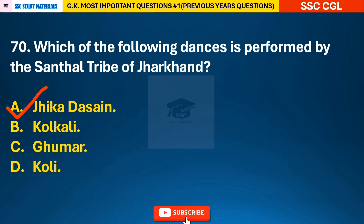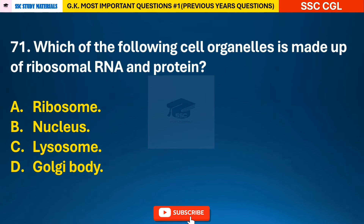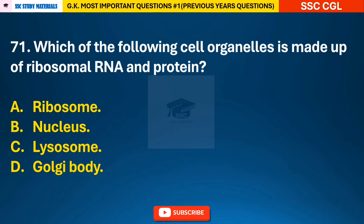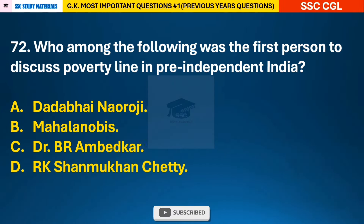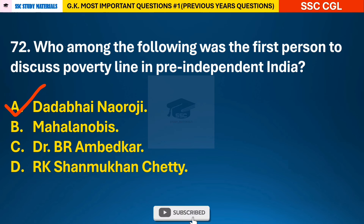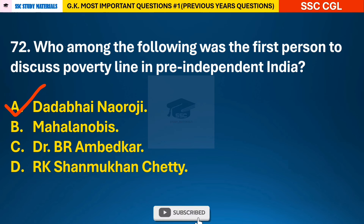Answer A: Jhumka Dasai. Question 71: Which of the following cell organelles is made up of ribosomal RNA and protein? — answer A: ribosome. Question 72: Who among the following was the first person to discuss the poverty line in pre-independent India? — answer A: Dadabhai Naoroji was the first person to discuss the poverty line in pre-independent India.